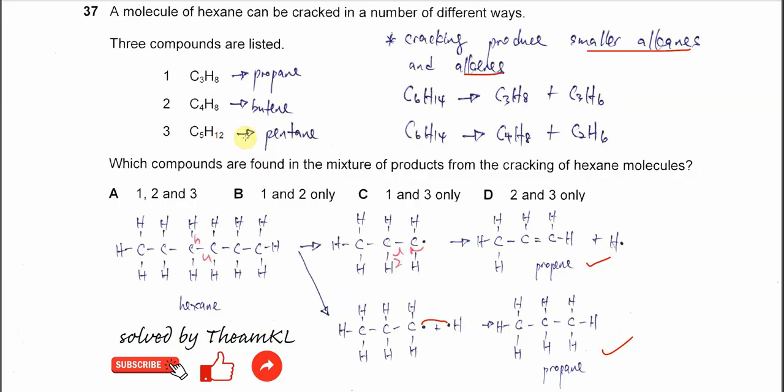For pentane, it's quite difficult to form. We cannot say impossible. Because for hexane, after it undergoes cracking, if it forms pentane, then it will be another CH2 there. So this is not alkene.